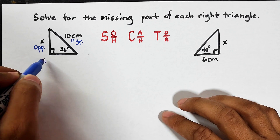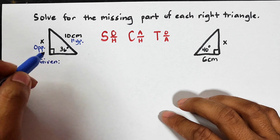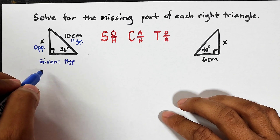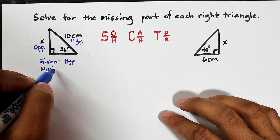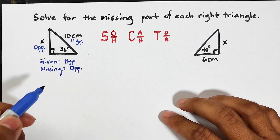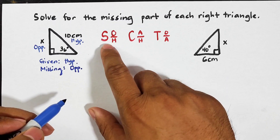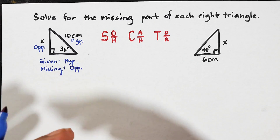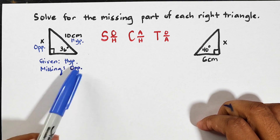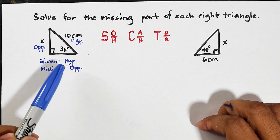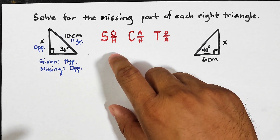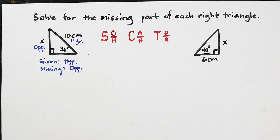Let's list down what we have. The given is the hypotenuse and the missing part is the opposite side. We need to decide which ratio has opposite and hypotenuse. You're correct — we can use SOH, therefore we will use sine.